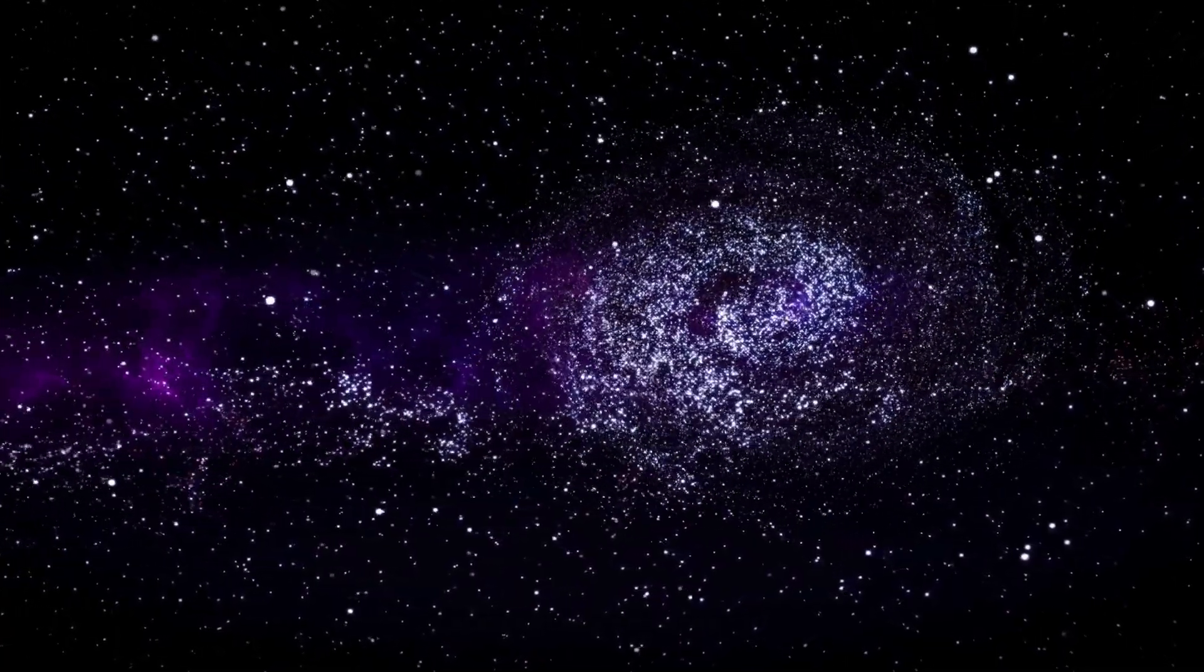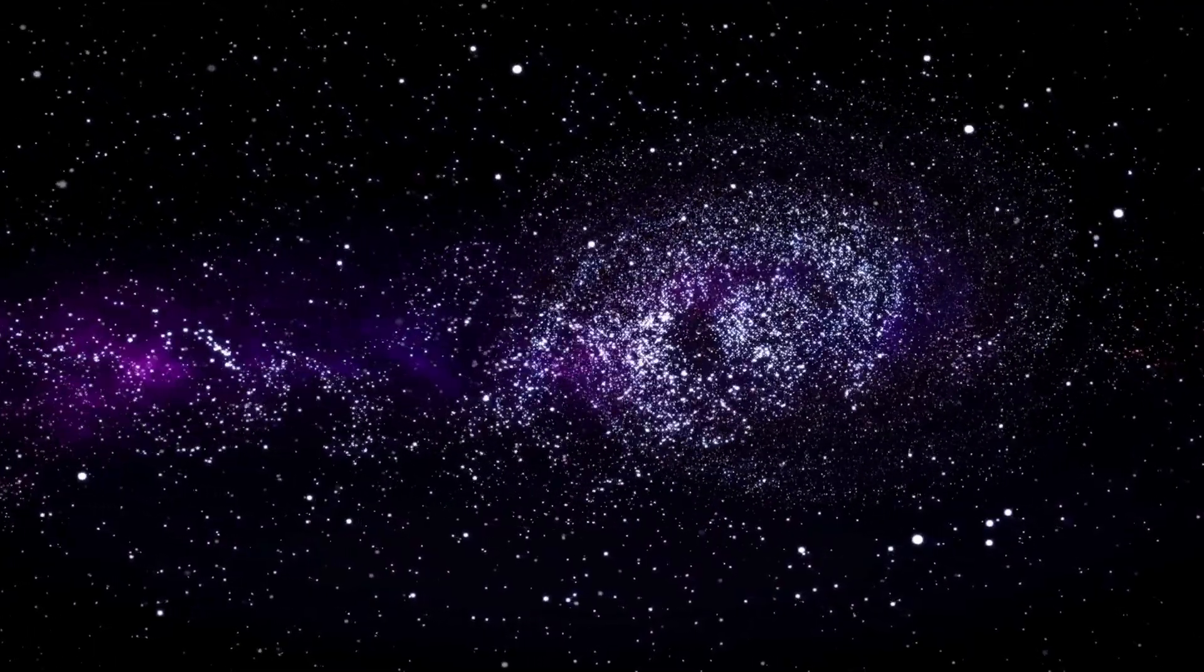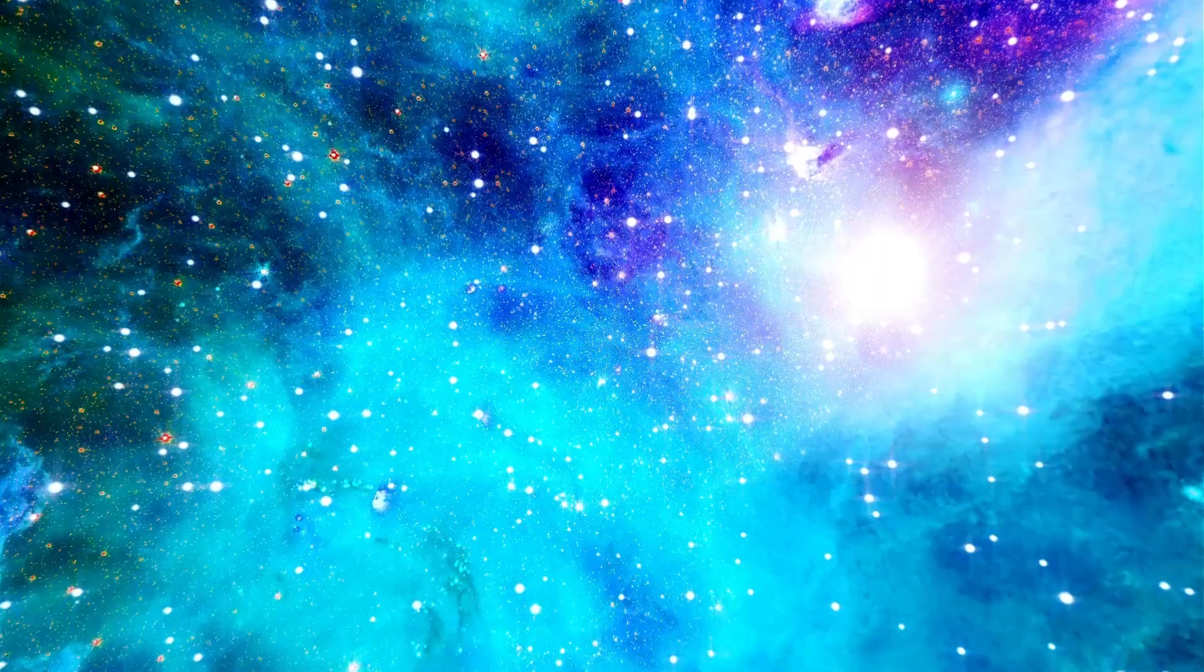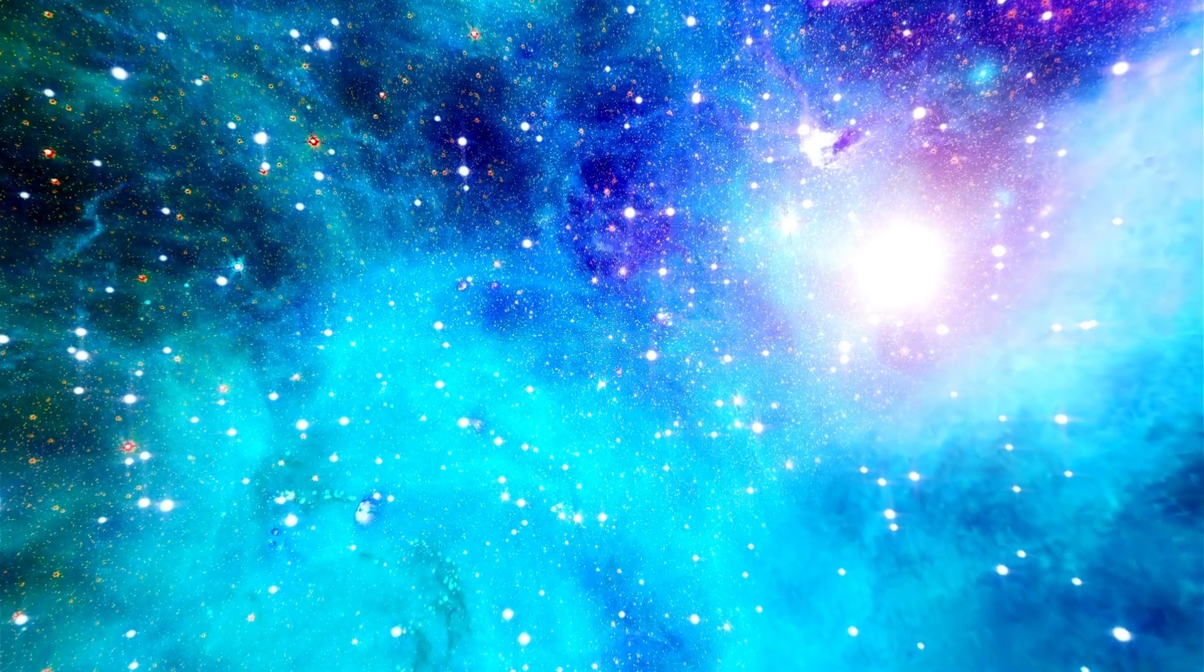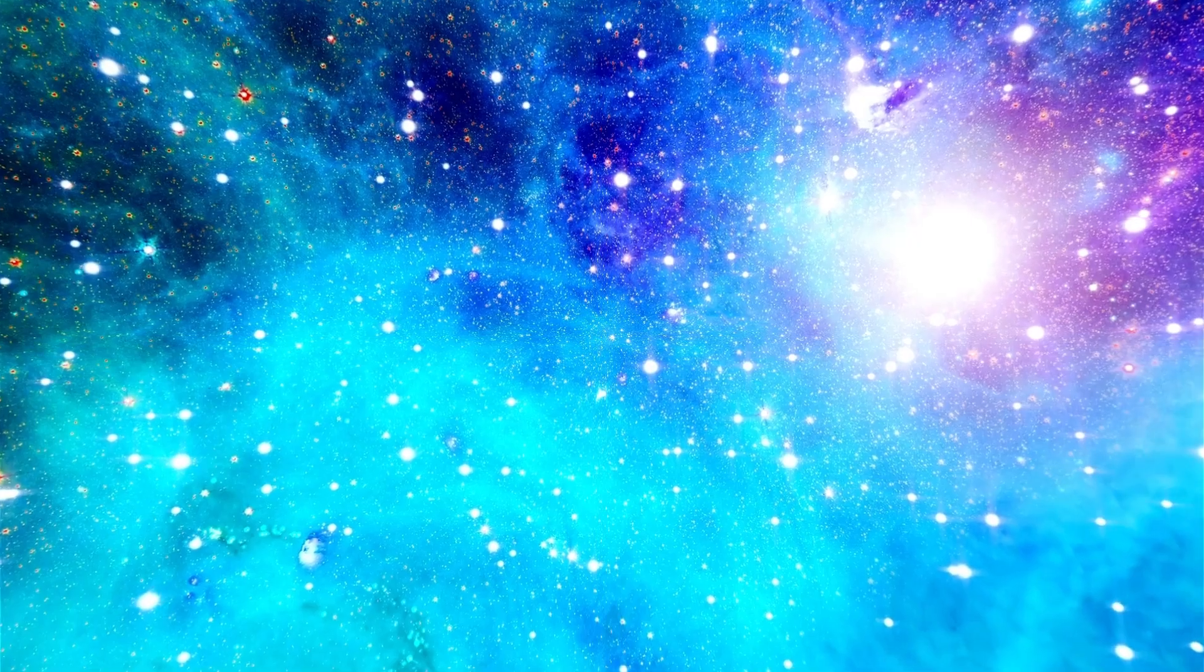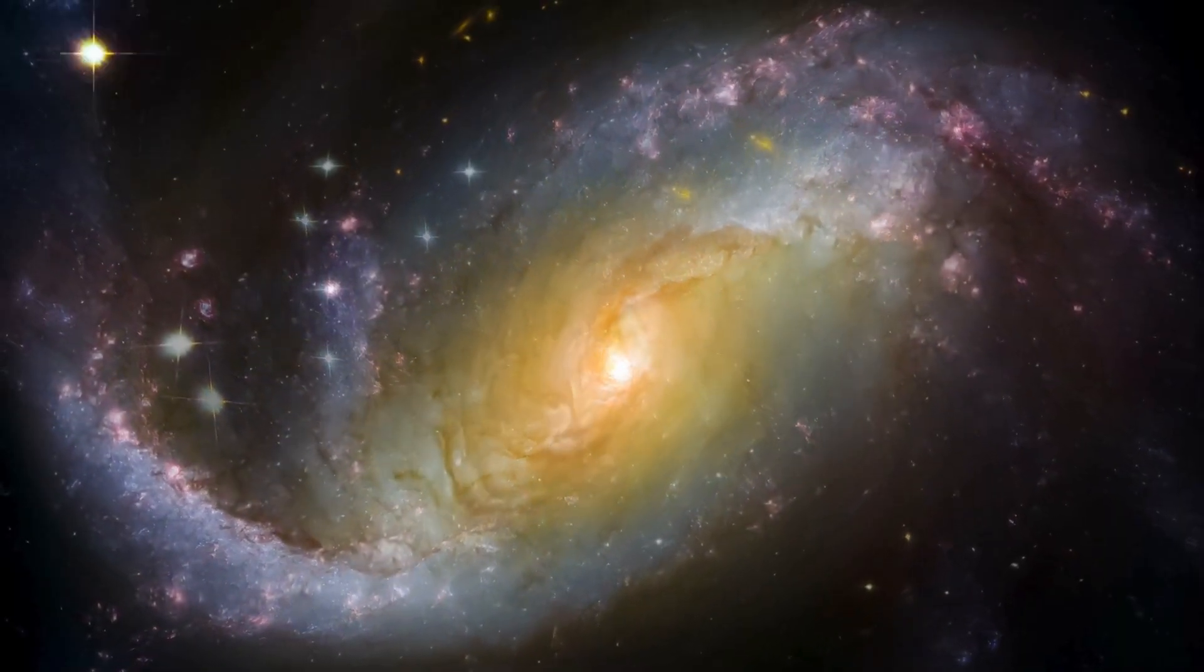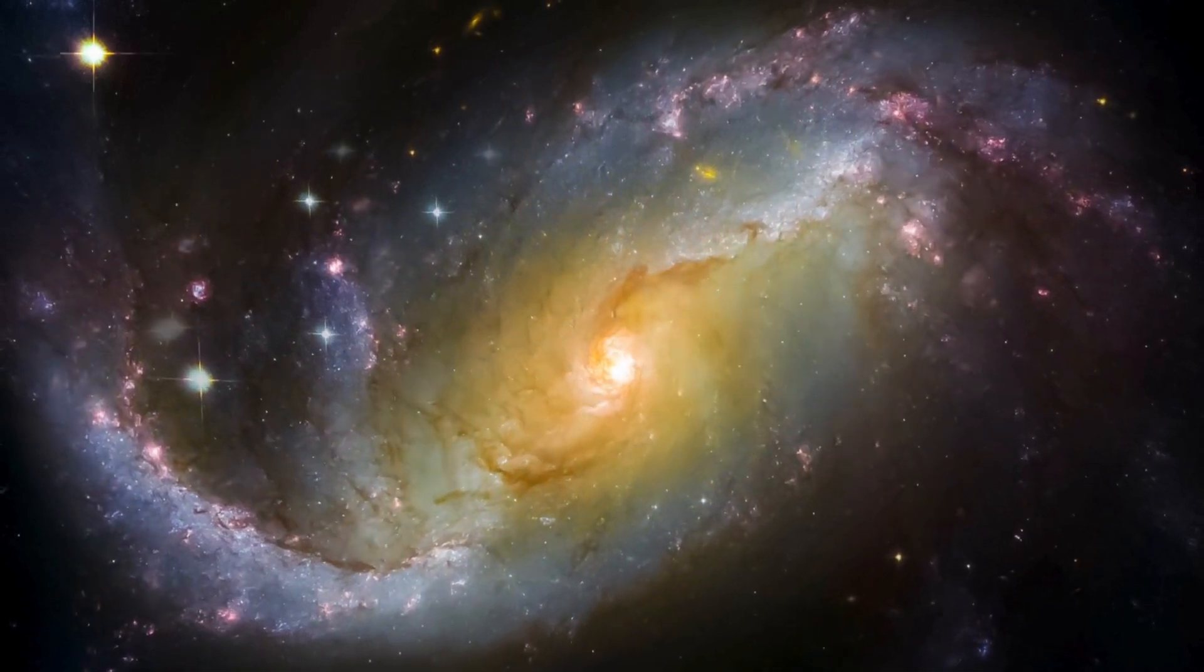Webb's infrared capabilities allow it to capture light from some of the earliest galaxies ever formed. These ancient galaxies appear as faint smudges of light, their glow redshifted by billions of years of cosmic expansion. By studying these galaxies, scientists can learn about the conditions of the early universe and how the first structures formed.